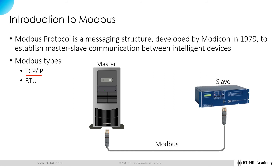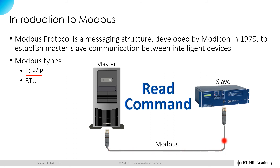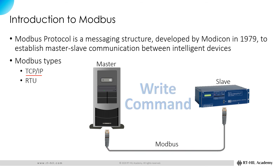A Modbus master can do either of the following. First, send a command to a Modbus slave to read the values of binary and integer data in the slave database — once the slave receives the command, it returns the requested data to the master. Second, send a command to a Modbus slave to write binary and integer values in the slave database — once the slave receives the command, it writes the data to its own database and sends an echo of the original message back to the master to confirm that the message was received.